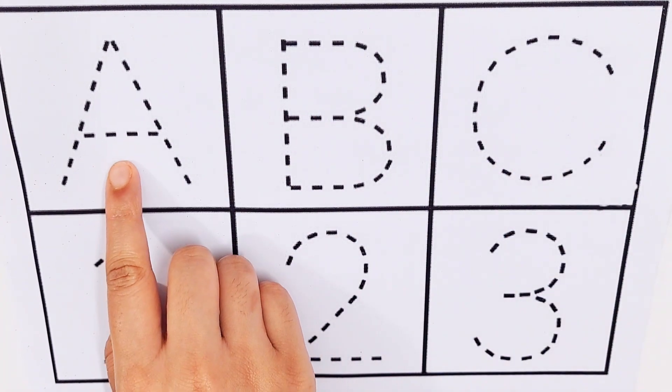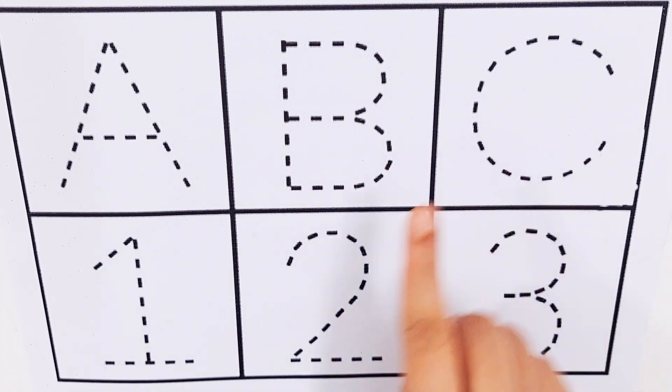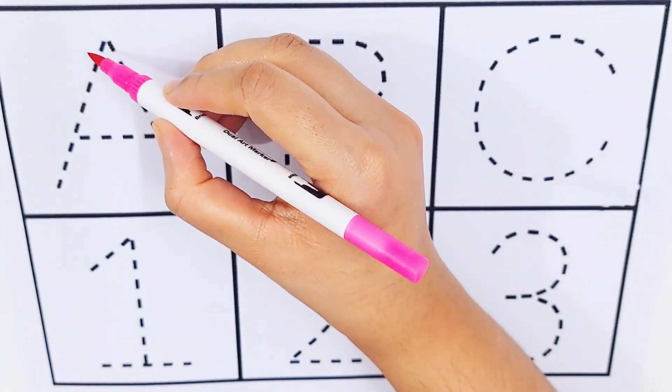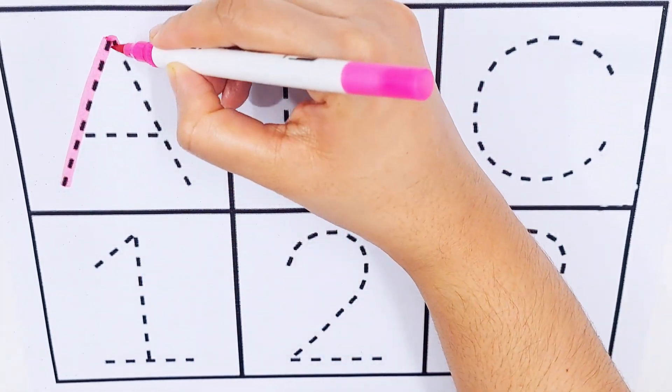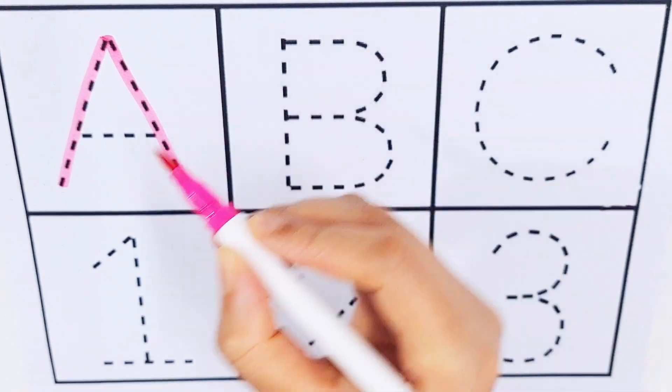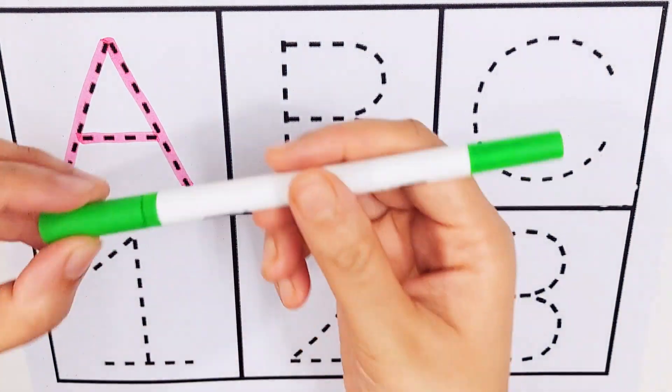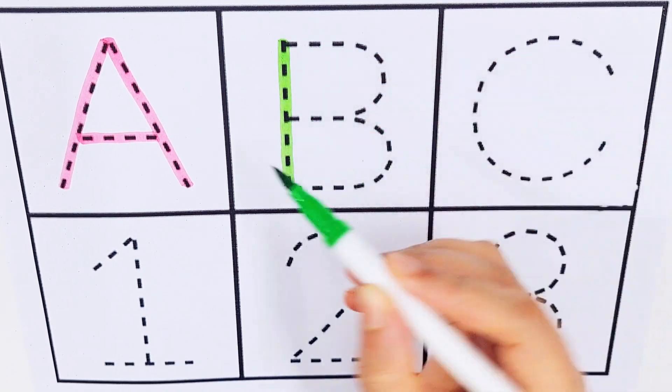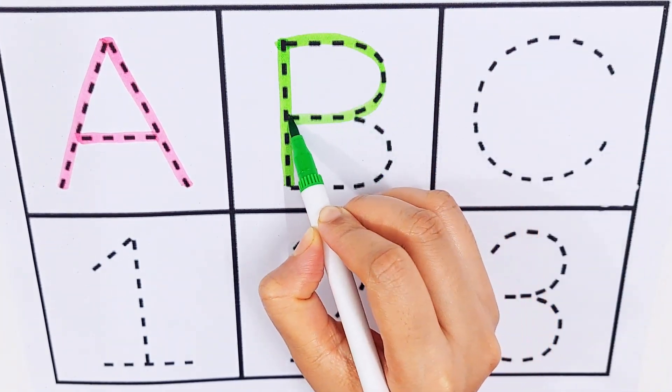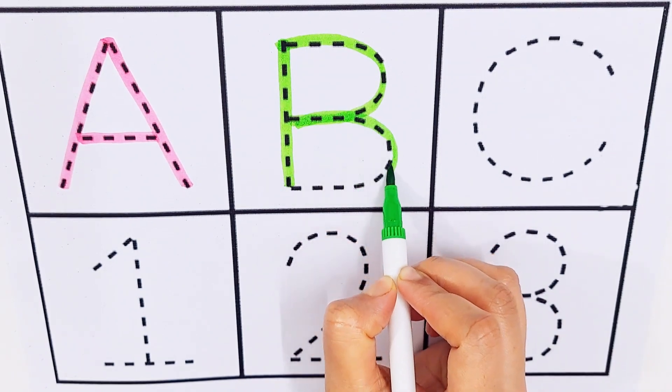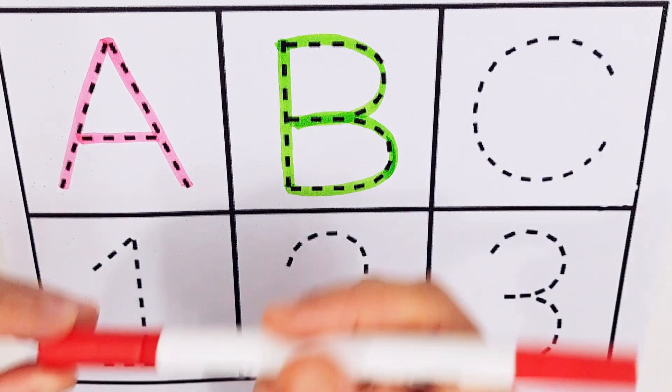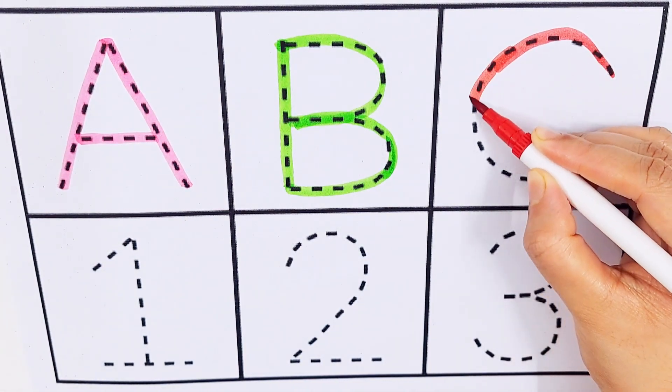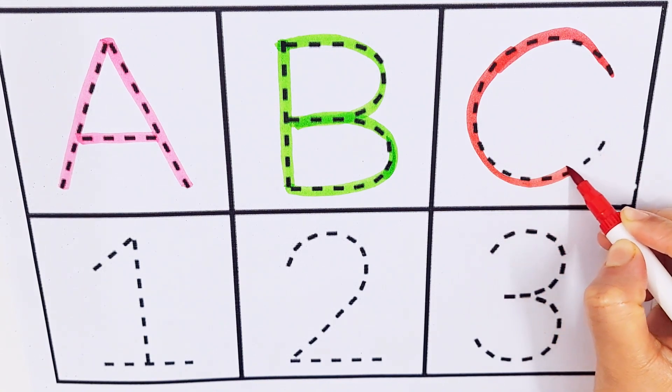A, B, C. One, two, three. Purple color. A, A for avocado, A for ant. Green color. B, B for birds, B for box. Red color. C, C for candy, C for cherry.